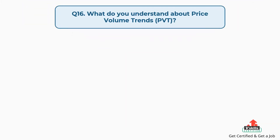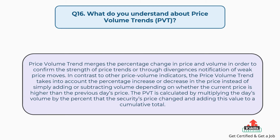Question number 16: What do you understand about price volume trends? Price volume trend merges the percentage change in price and volume in order to confirm the strength of price trends or through divergences notification of weak price moves. In contrast to other price volume indicators, the price volume trend takes into account the percentage increase or decrease in the price instead of simply adding or subtracting volume depending on whether the current price is higher than the previous day's price. It is calculated by multiplying the day's volume by the percent that the security's price changed and adding this value to a cumulative total.